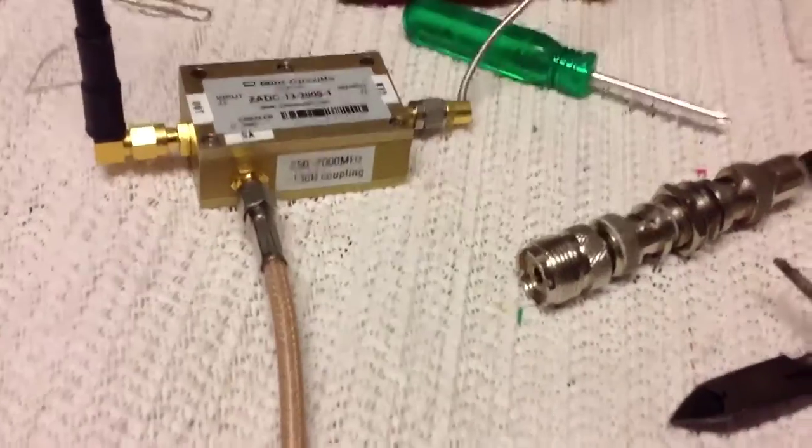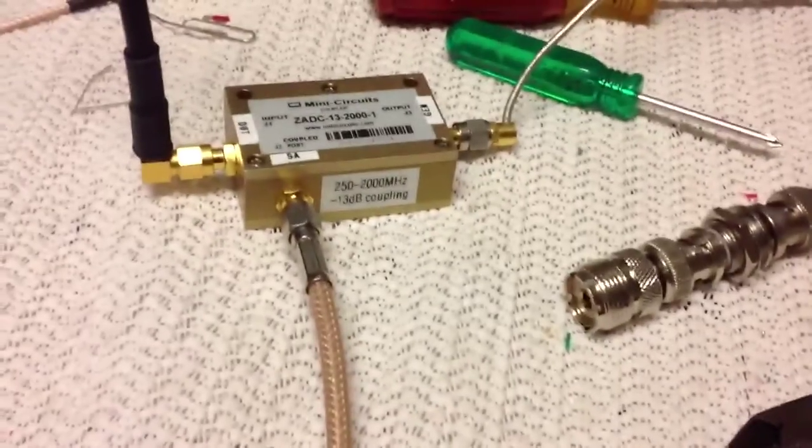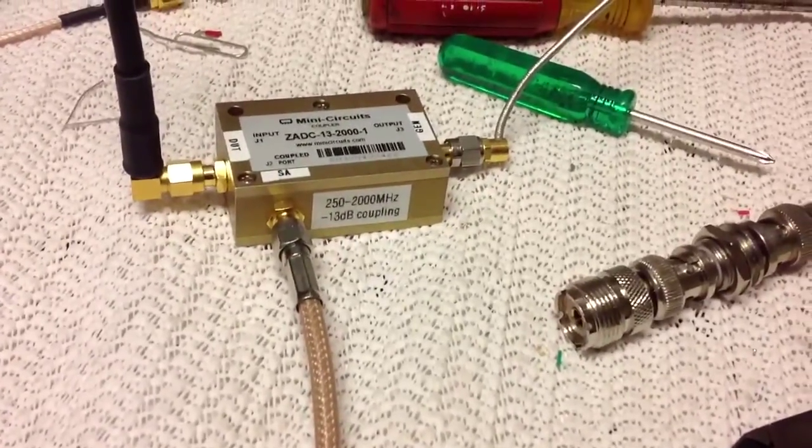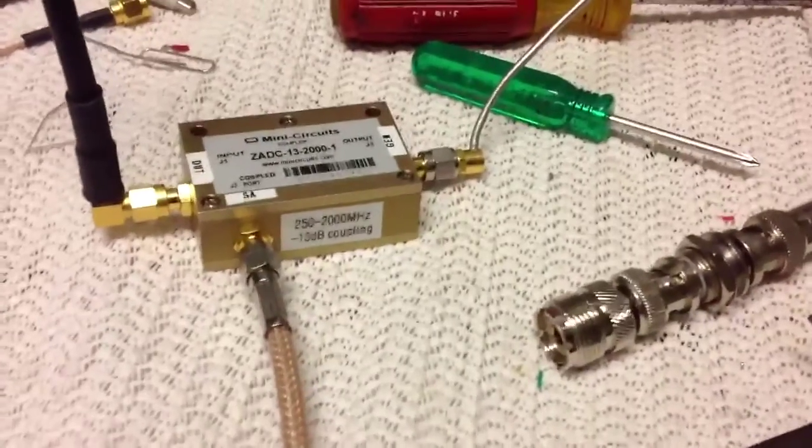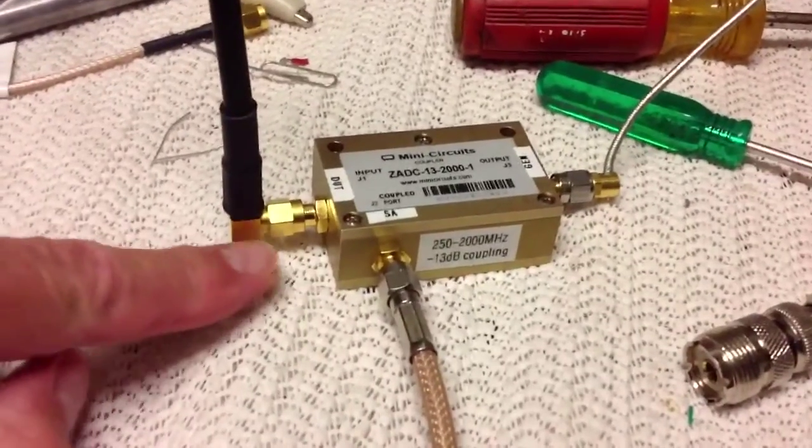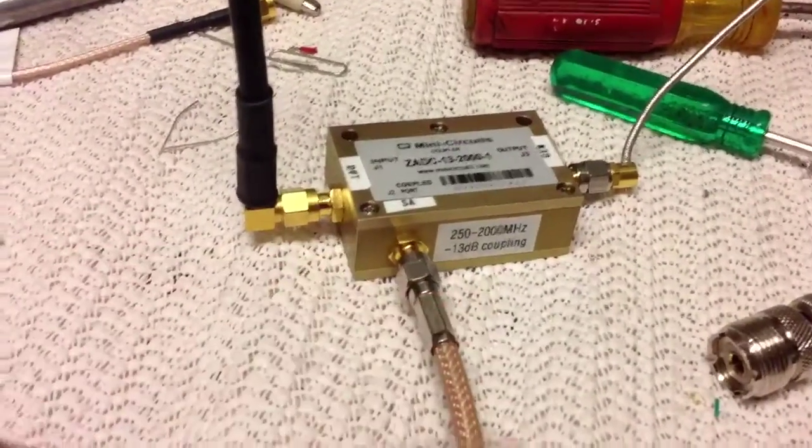The coupled port goes to the spectrum analyzer, and the output goes to the generator. So the directional coupler is hooked up backwards to measure reflected power back this way.